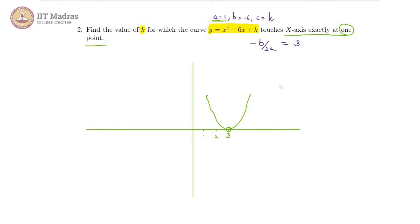That means for this condition to be satisfied, at the vertex y should be equal to 0. That is, y of 3 should be equal to 0, and that is equal to 3 squared is 9, minus 6 into 3 is 18, plus k equals 0. This gives us k is equal to 9.